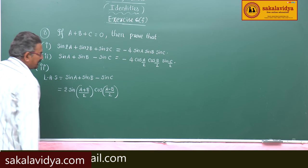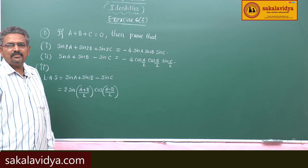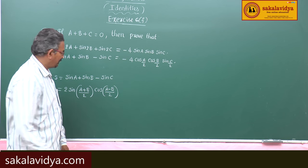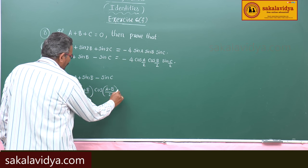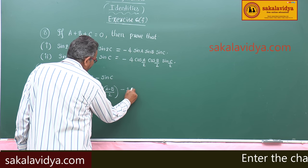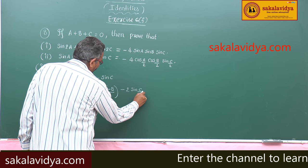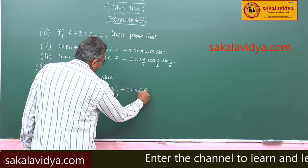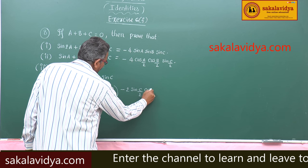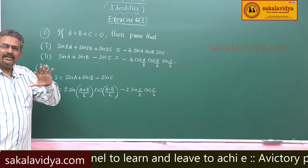sin C can be written as 2 sin(C/2) cos(C/2). So the minus sin C term becomes minus 2 sin(C/2) cos(C/2).